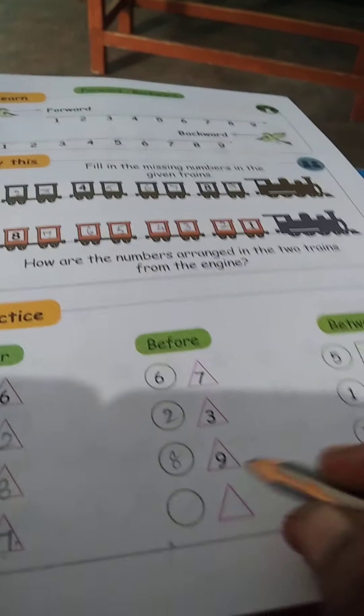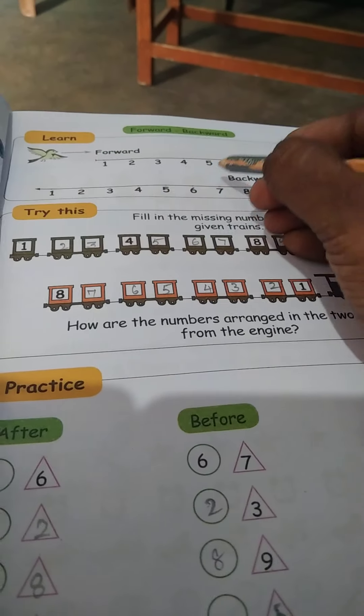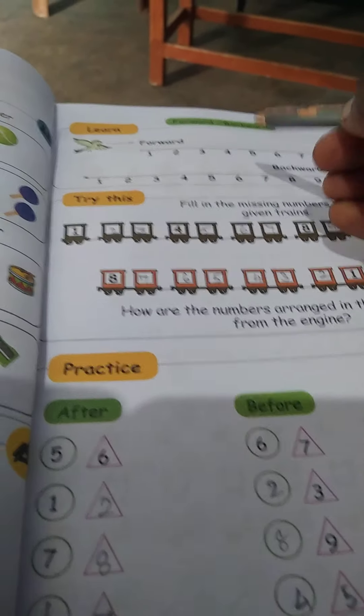Next, 9 before, what do you say? 8. Next, what do you say? 5 before, 5, 5 before, 4.